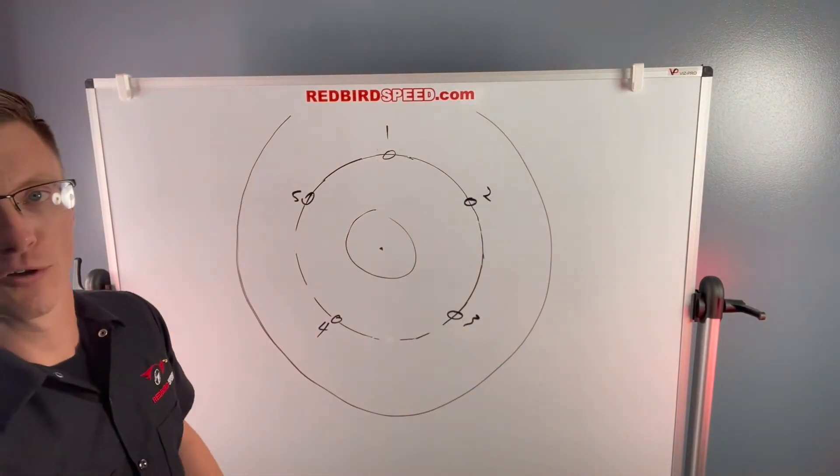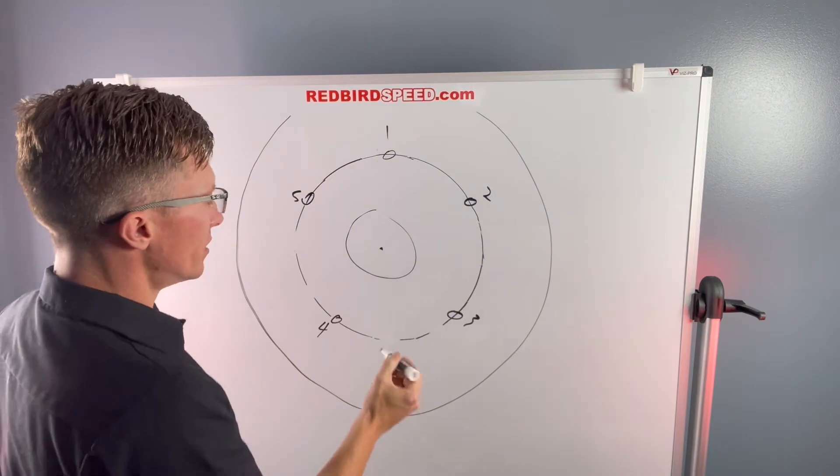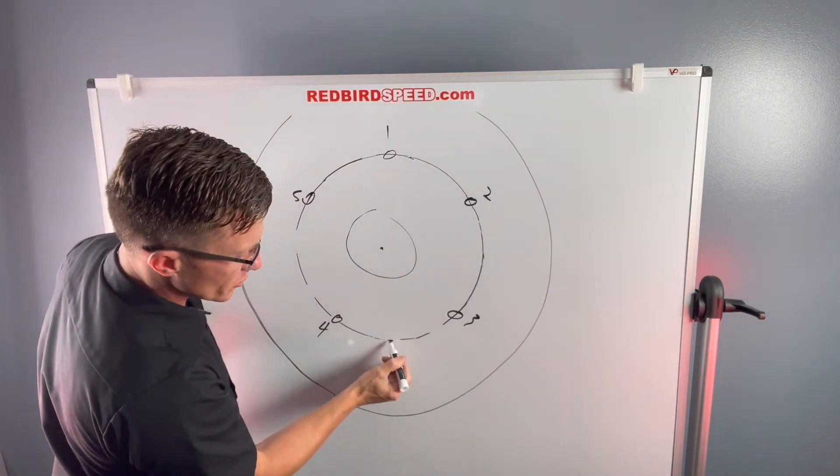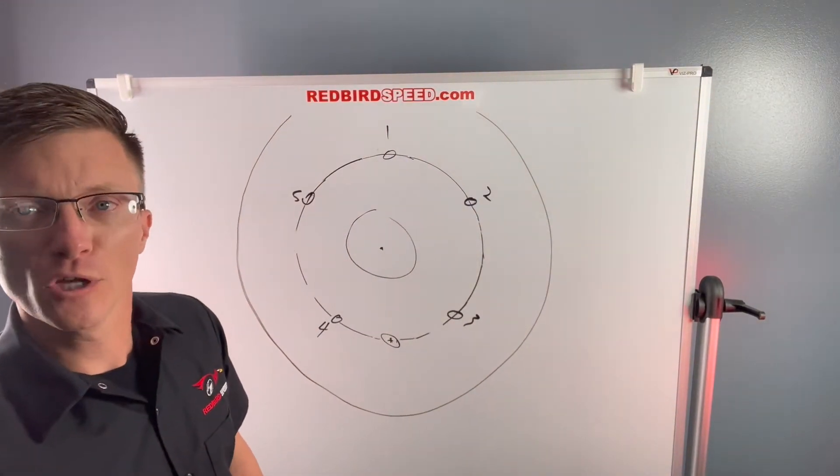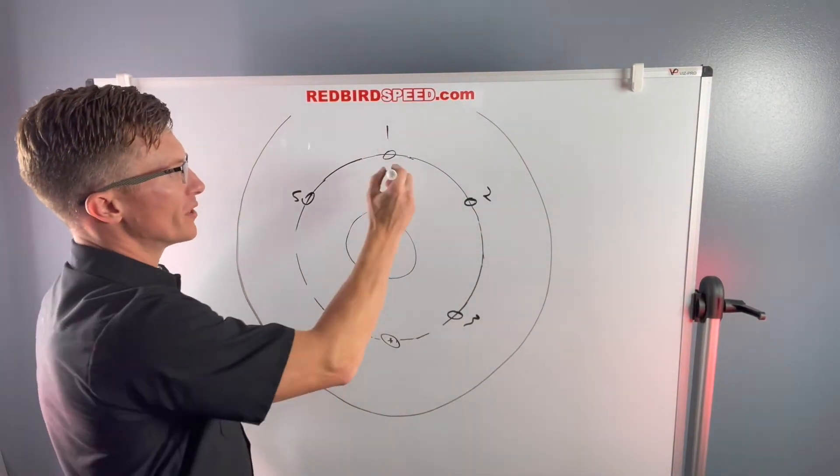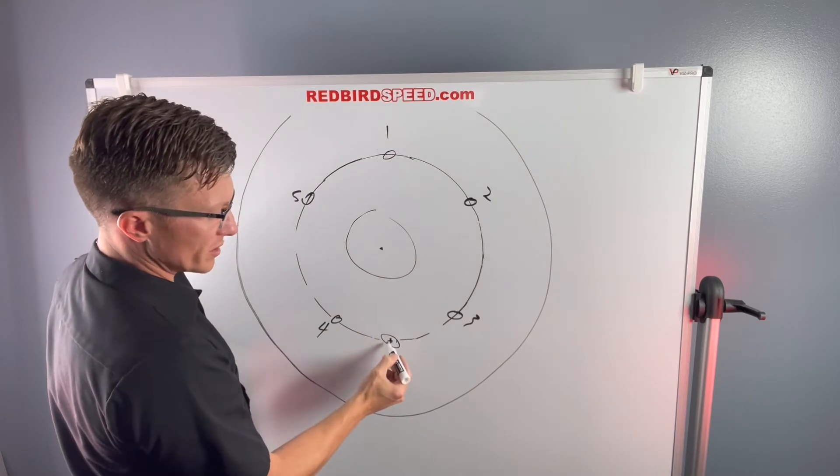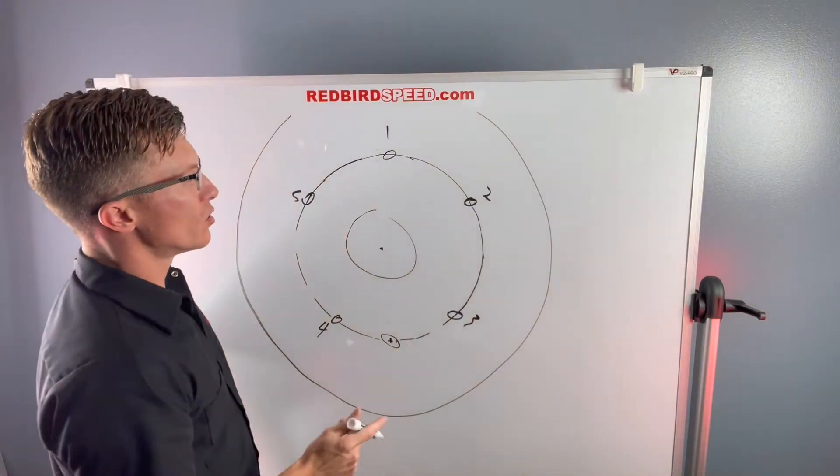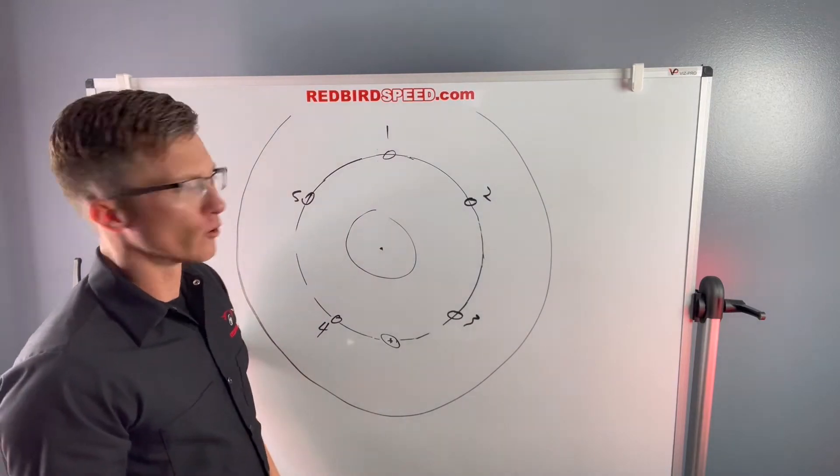So when you're measuring a five lug bolt pattern, you're technically going from the center of stud one to this imaginary point down here. There's no stud there, so you're measuring from center of stud one to the center of the bottom of this diameter of this bolt circle. So that's why your number can kind of get thrown off.